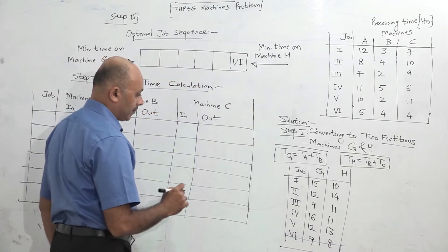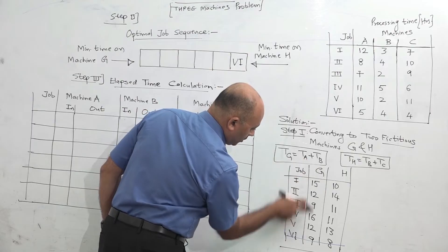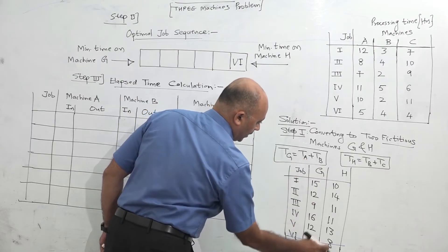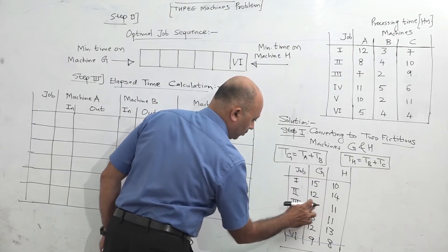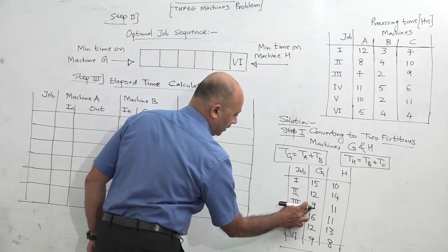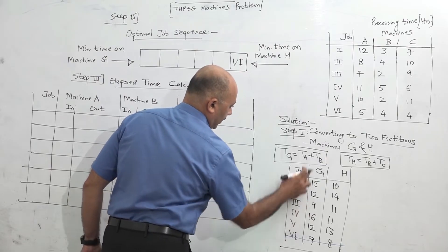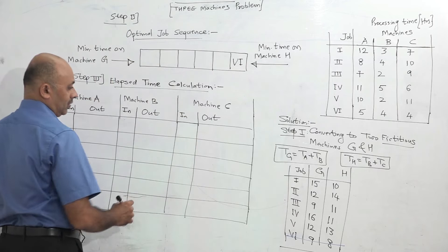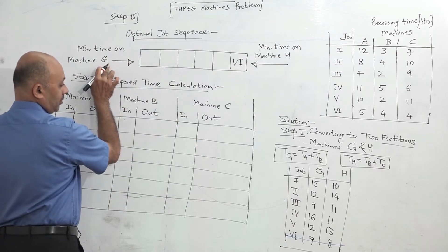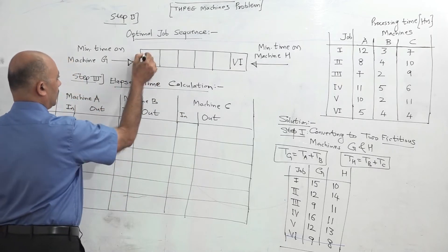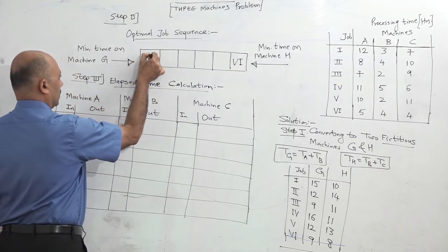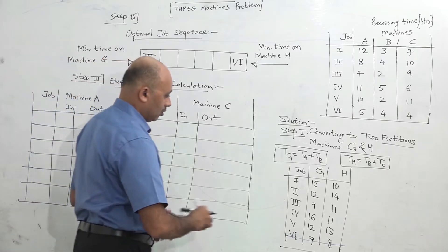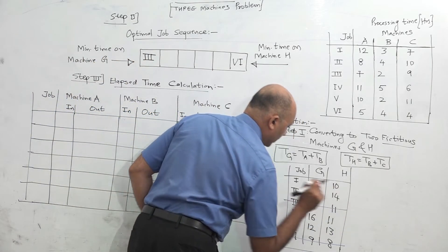Next, G minimum is 9 and H minimum is 11. So we take 9, which is job 3 on G, and it goes from the left side. We write job 3 on the left. Job 3 is now eliminated.